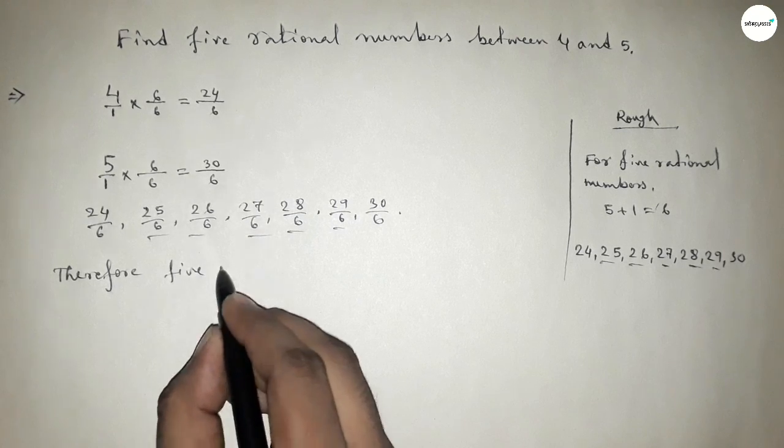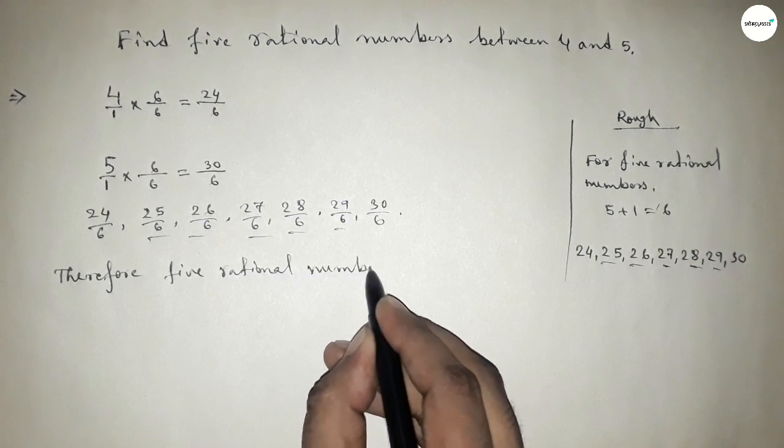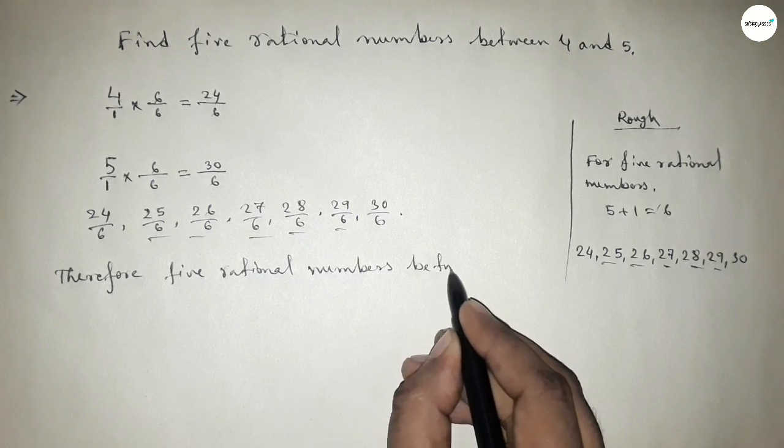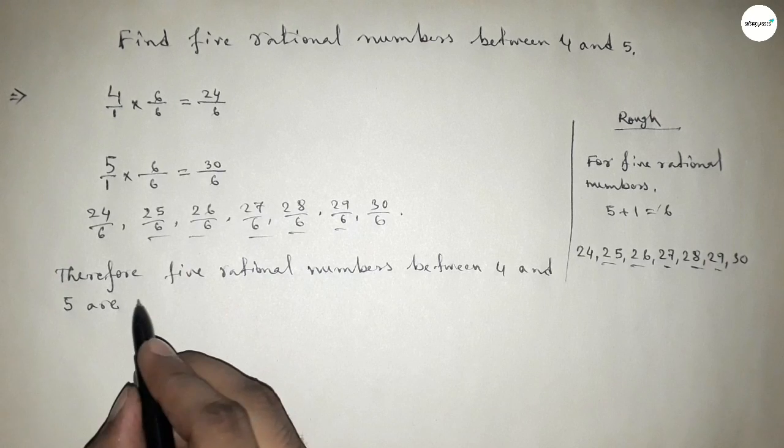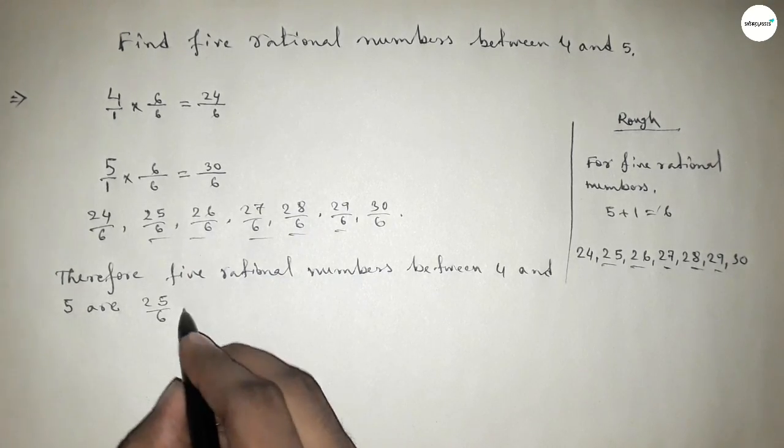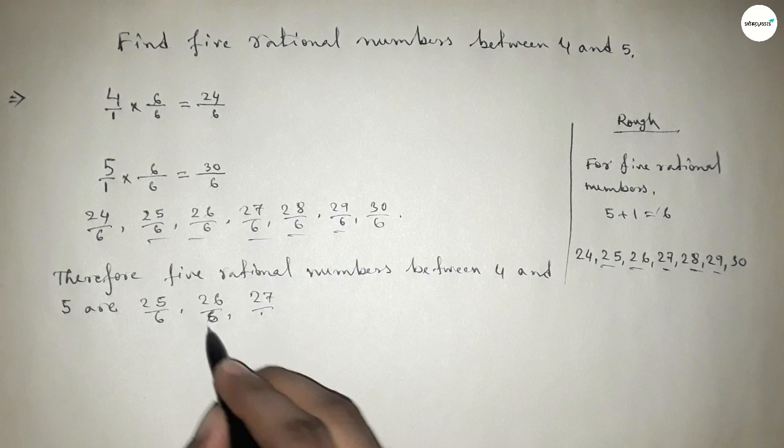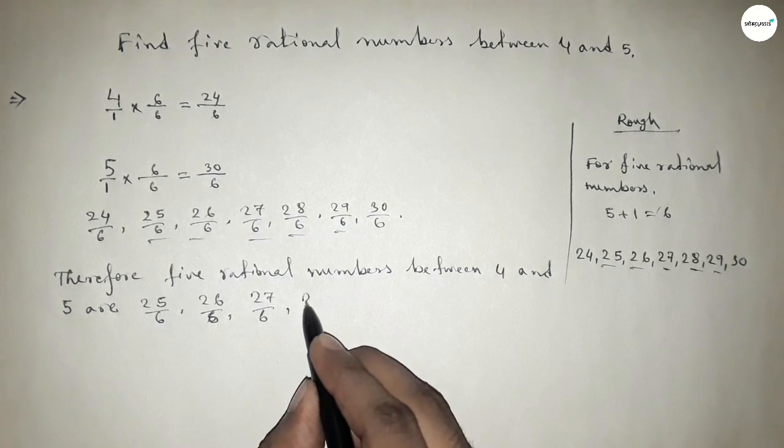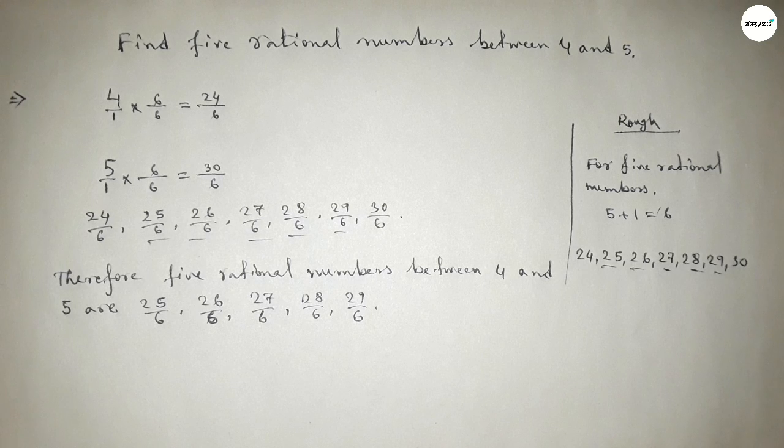Therefore, five rational numbers between four and five are: 25/6, 26/6, 27/6, 28/6, and 29/6. This is the process to find five rational numbers between four and five.